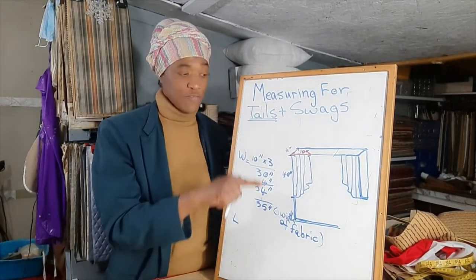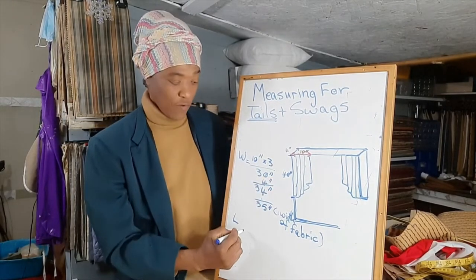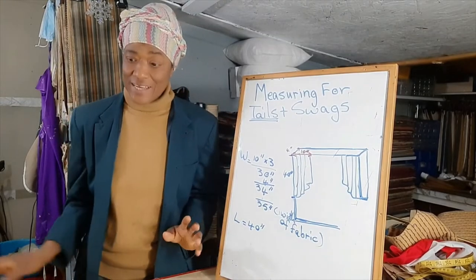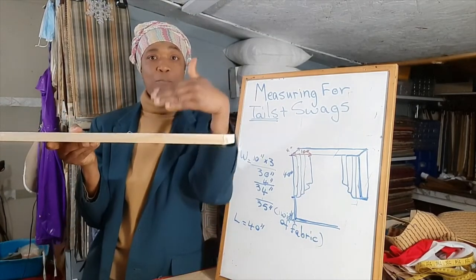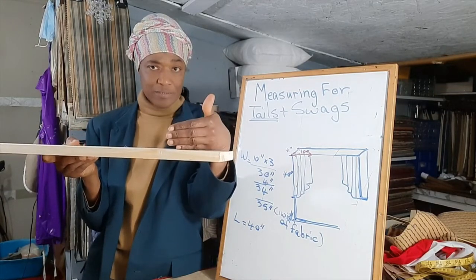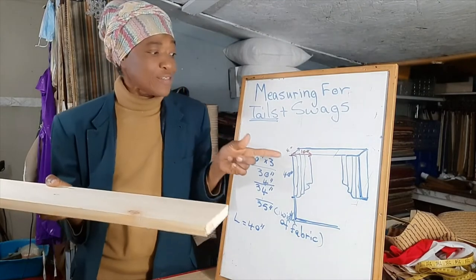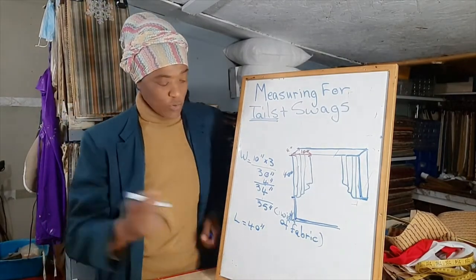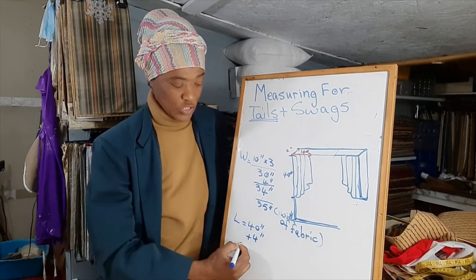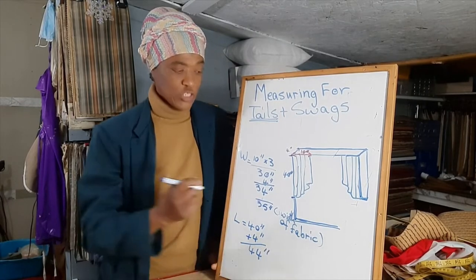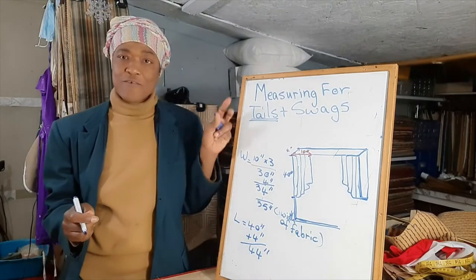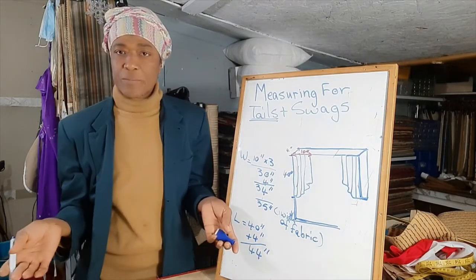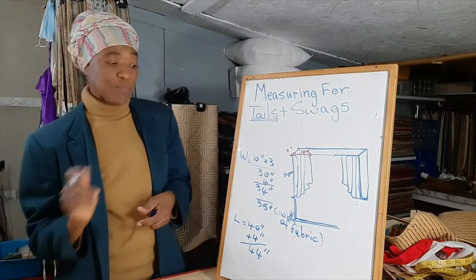Now we've dealt with the width — let's move on to the length of the tail. We said that our two-thirds measurement is 40 inches. However, we also need extra fabric to wrap over on top of the mounting board. The depth of the return is 4 inches, so let's give ourselves an extra 4 inches of fabric: 40 plus 4 inches is 44 inches. Because we've already added the 4 inches for the wrap-over, we don't need to worry about an additional seam allowance there.